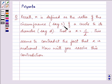Say c for circumference and d for diameter. That is, pi equals c over d. This seems to contradict the fact that pi is irrational. How will you resolve this contradiction?